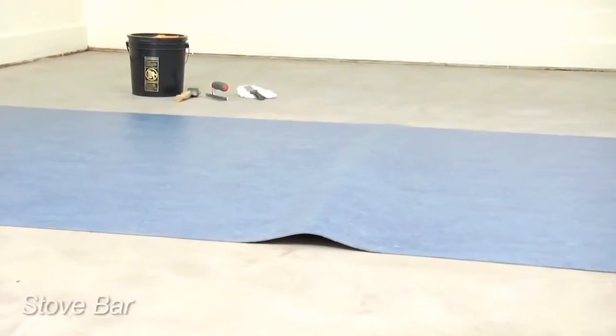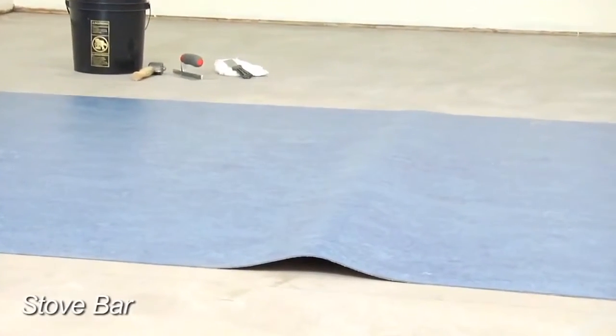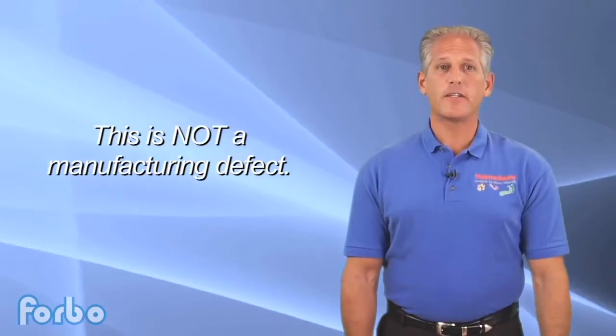Every full roll of Marmoleum will have what is called a stove bar. A stove bar is a hump in the middle of the roll. This is a result of the drying process and is not a manufacturing defect in the material. Similar to N-curl, the stove bar can be removed by massaging the material.